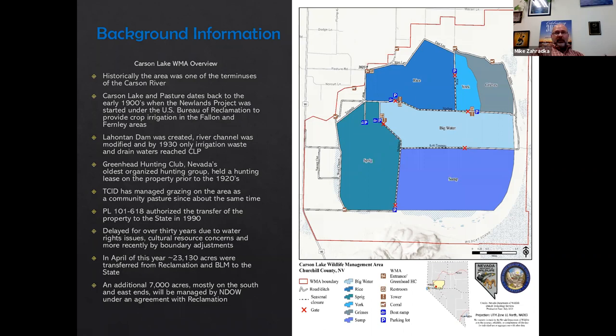In April of this year, approximately 23,130 acres were transferred from Reclamation and BLM to the state. With that comes an additional 7,000 acres, mostly on the south and east ends, which will be managed by NDOW as part of the WMA under an agreement with Bureau of Reclamation.